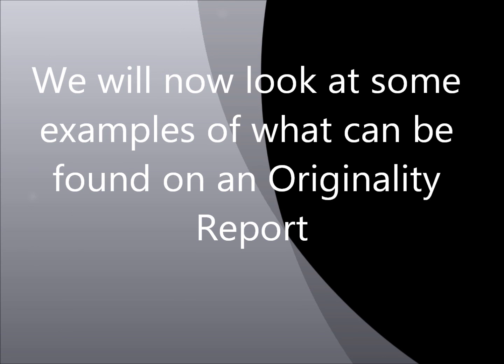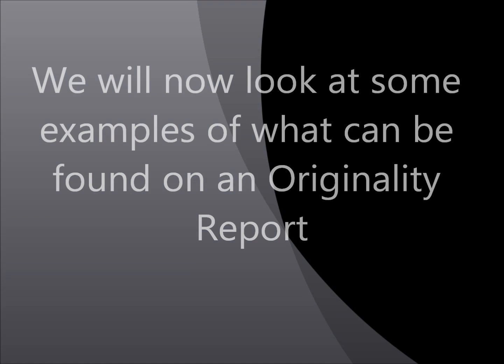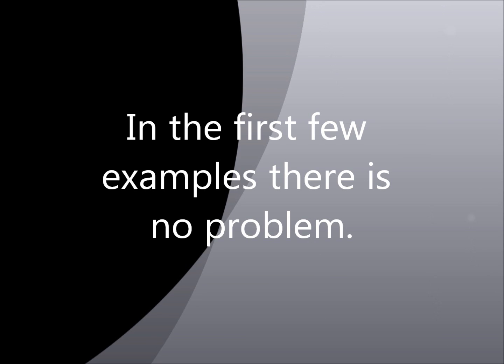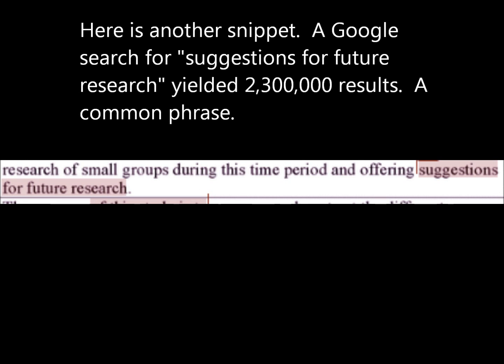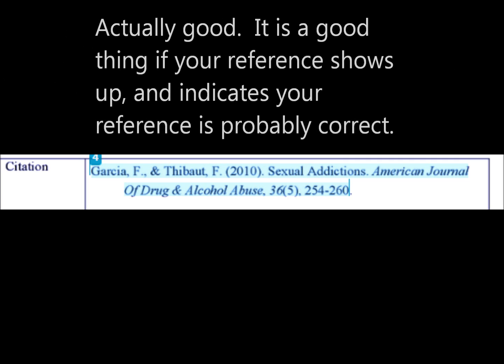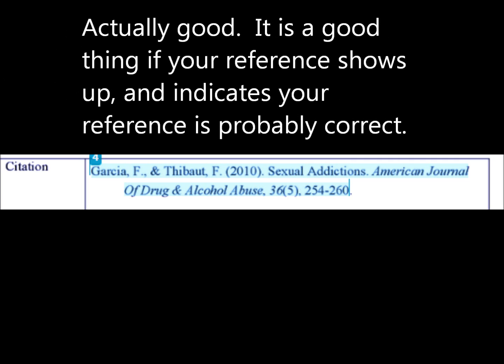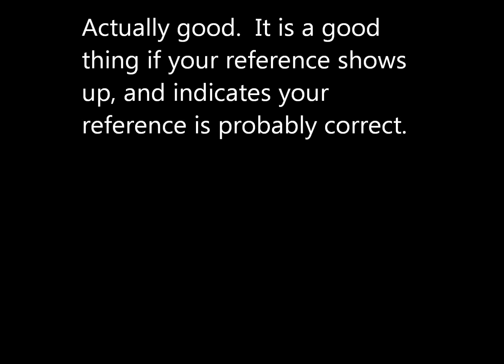We will now look at some examples of what can be found on an originality report. Here is an example of what I call noise — little snippets that can usually be safely ignored, but make sure you take a look at them. Most good references will show up, and a reference showing up in your originality report is nothing to be worried about.